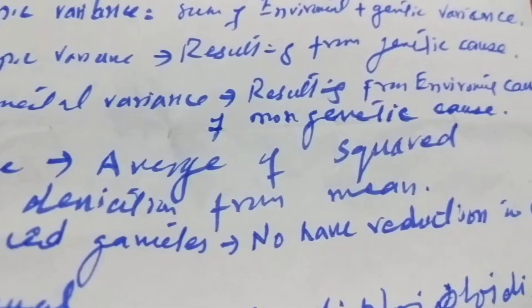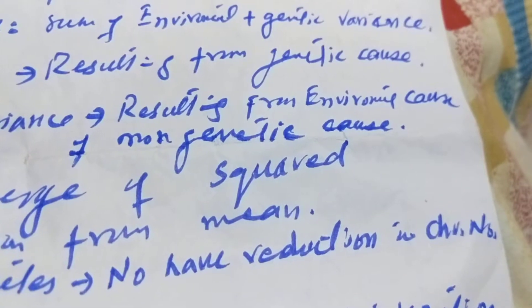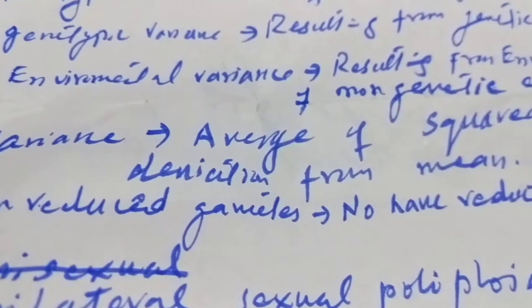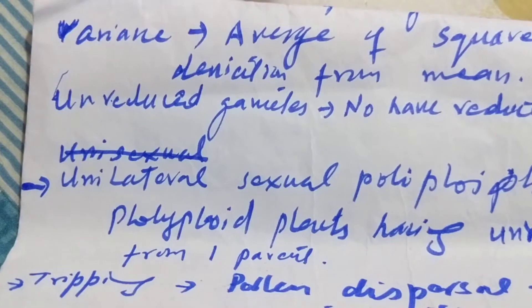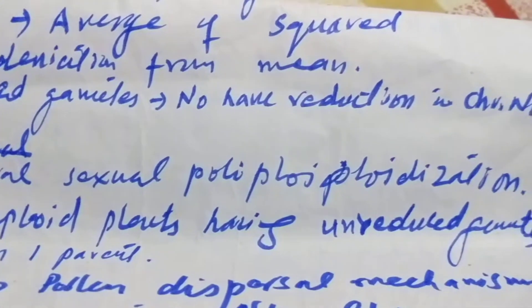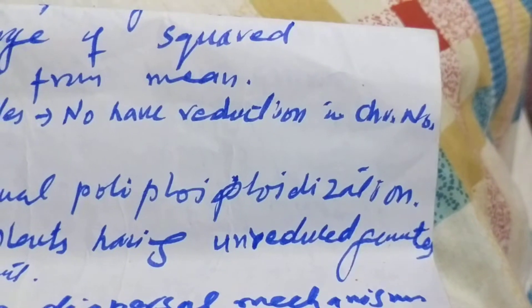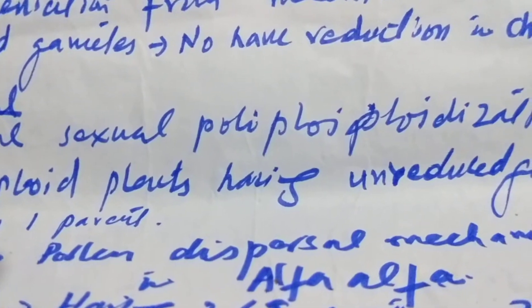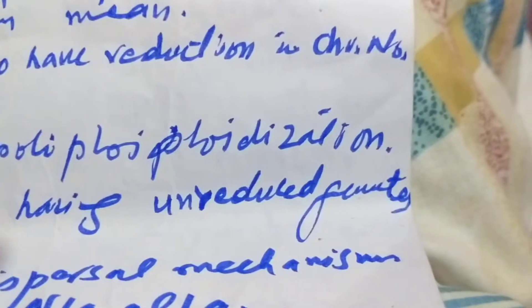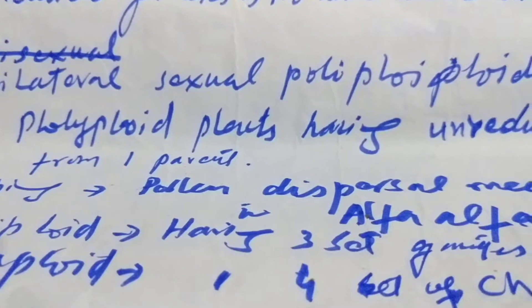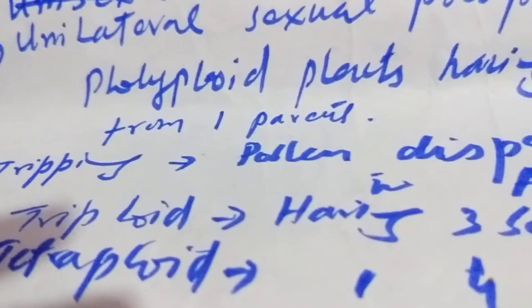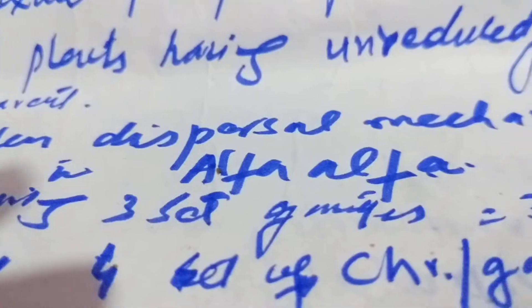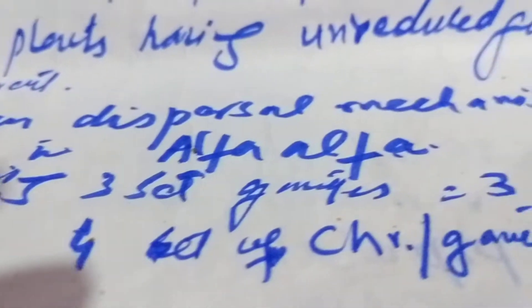Environmental variance results from environmental or non-genetic cause. Variance is the average of square deviation from mean. Unreduced gametes are those having no reduction in chromosome number — unilateral sexual polyploidization. Polyploid plants having unreduced gametes from parents. Tripping is the process of dispersal mechanism in alfalfa.